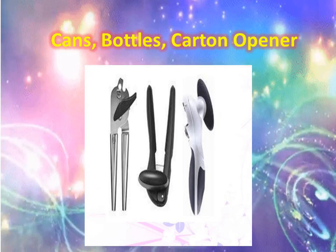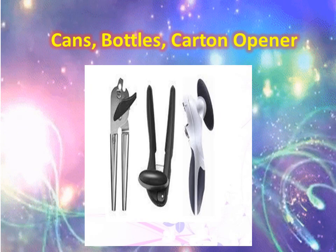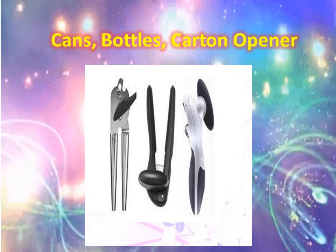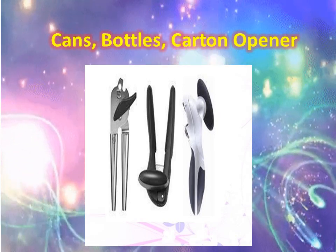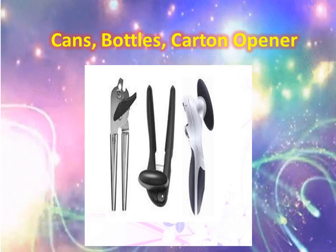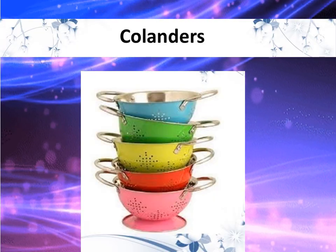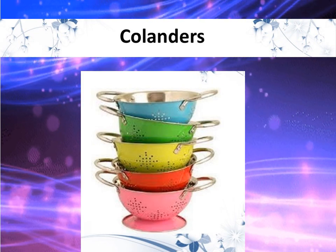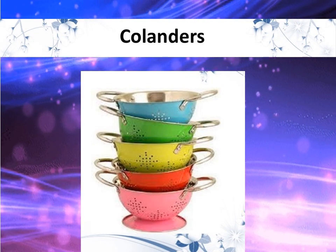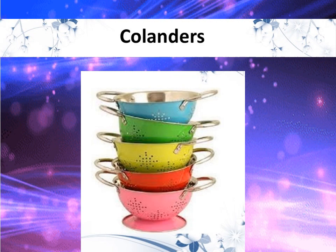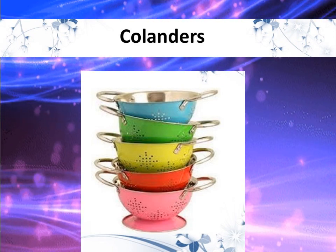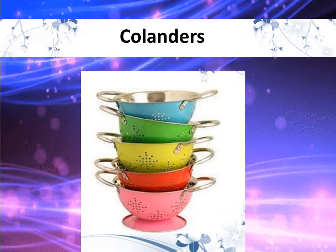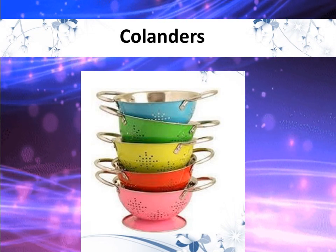The main function of the can, bottle, and carton opener is to open food containers easily. Next we have colanders, also called a vegetable strainer. They are essential for various tasks from cleaning vegetables to straining pasta or other contents.